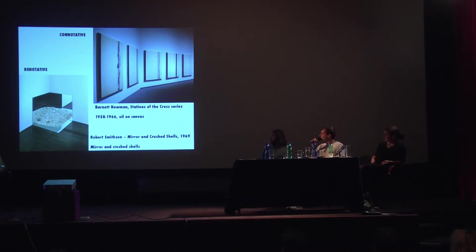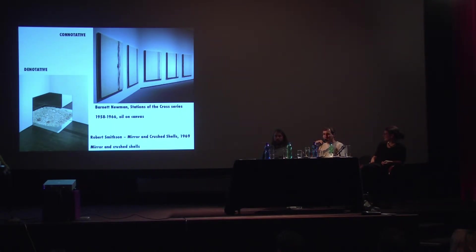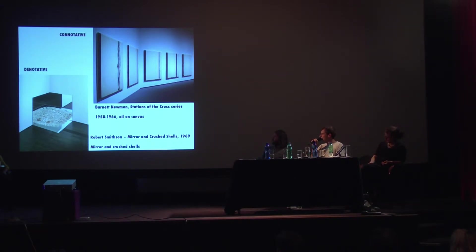Smithson's work is mirror and crushed shells. With the connotative, Barnett Newman's title 'The Stations of the Cross' series — you might notice there is no Jesus there nor any cross; it's abstract painting. He's rather trying to suggest what you should see and how you should react to the work of art. We could also suggest that denotative titles are somehow specific to conceptual works of art, while connotative titles were used by Barnett Newman and some of his contemporaries.